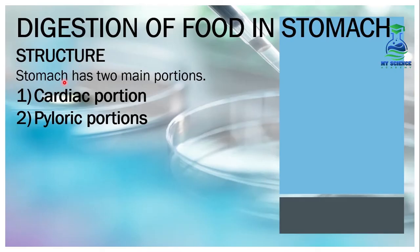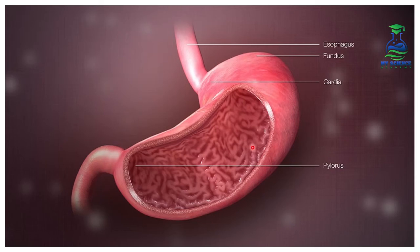The structure of the stomach has two main portions: number one is the cardiac portion and number two is the pyloric portion. The cardiac and pyloric portions can be observed through the stomach diagram. The cardiac portion is at the top, and beneath it is the pyloric portion.